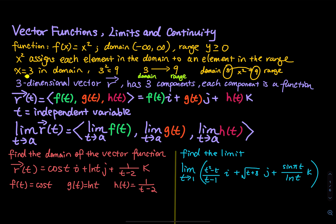Let's say we pick an element in the domain, x equals 3. The assignment is you square the 3, you get a 9. So 3 is in the domain, 3 is assigned to 9, and 9 is in the range. A picture you see in textbooks shows two ellipses — one for domain, one for range — with 3 in the domain and 9 in the range. The connection between 3 and 9 is x squared, so x squared is a bridge that connects the domain and the range.